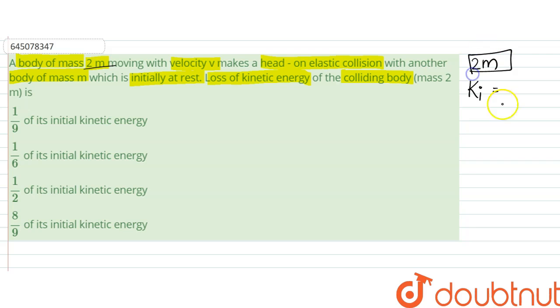having mass 2m is equal to half into 2m into v square, which is equal to mv². Right, this is the initial kinetic energy. Now, how is the collision? So this is of mass 2m,